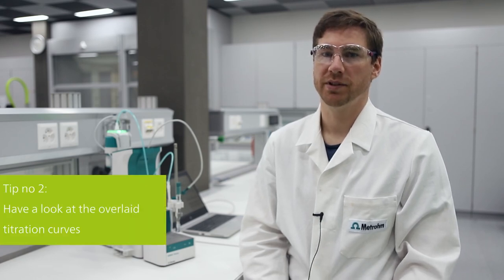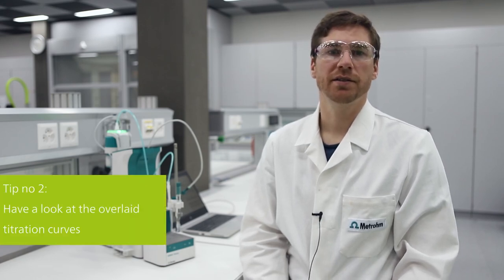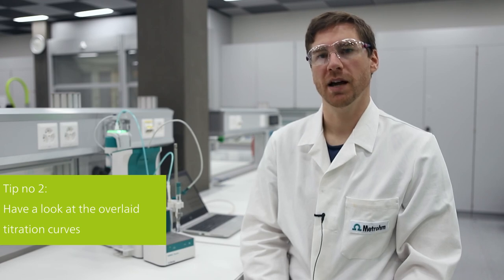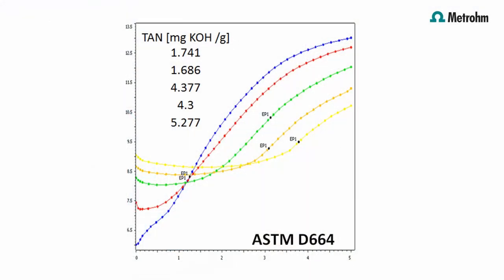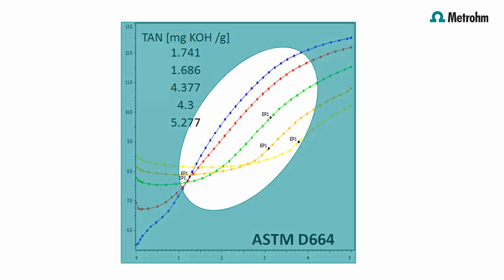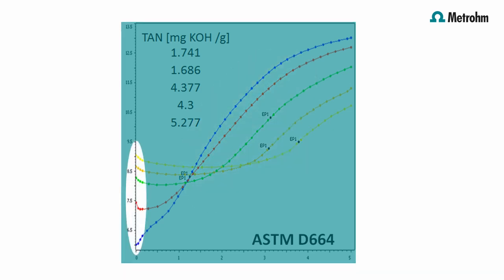In my first tip I said make sure that the rinsing time is long enough, but how do you know if your rinsing time is sufficient? The answer is my tip number two: have a look at the overlay titration curves. Here you can see an acid number determination of used engine oil where the electrode was not sufficiently cleaned between determinations. If you look at the equivalence points, you see them shifting, which is an indication for insufficient cleaning. Also look at the start potential. It should always be the same for the same sample. If not, your cleaning is not good enough.